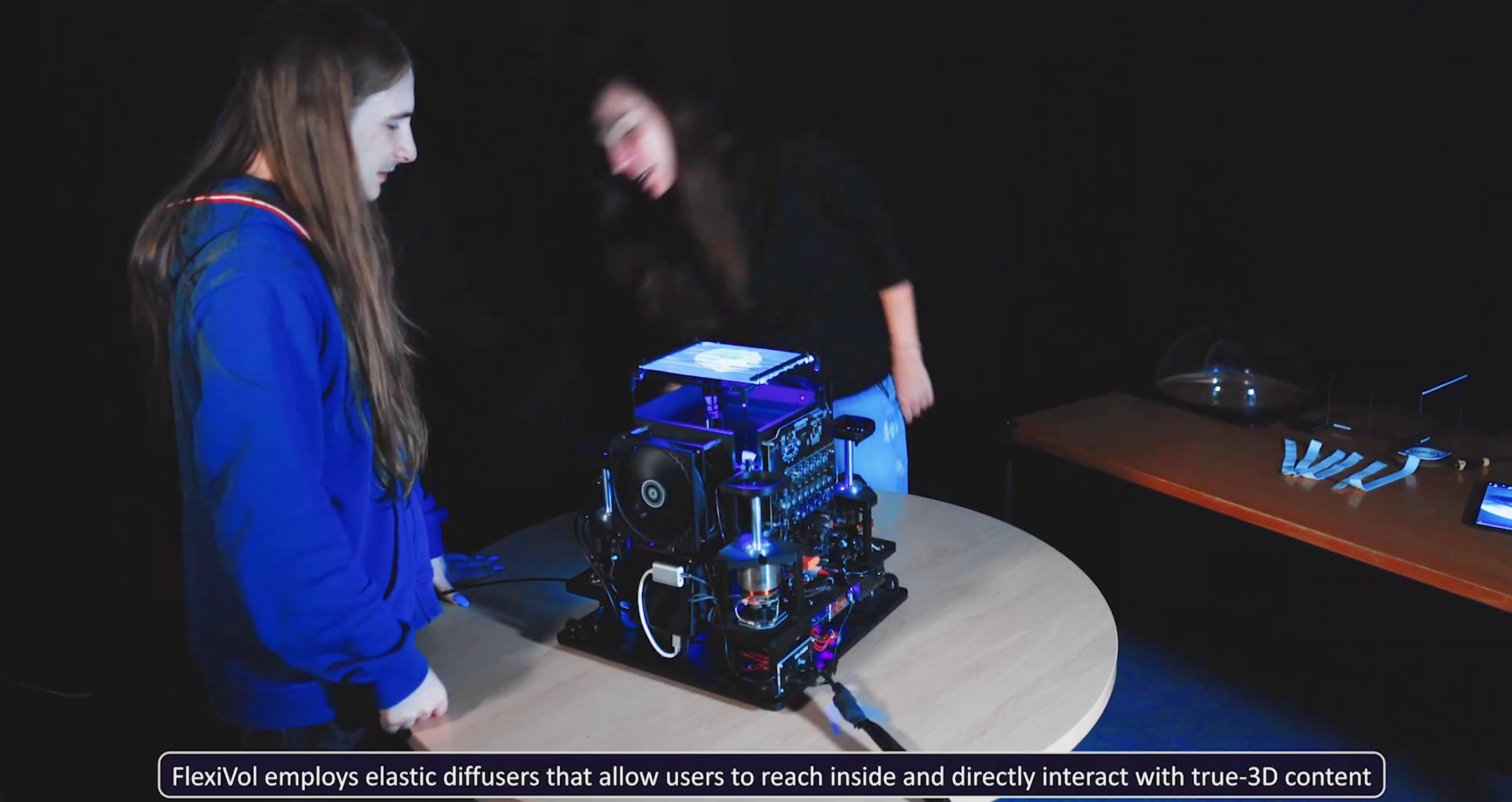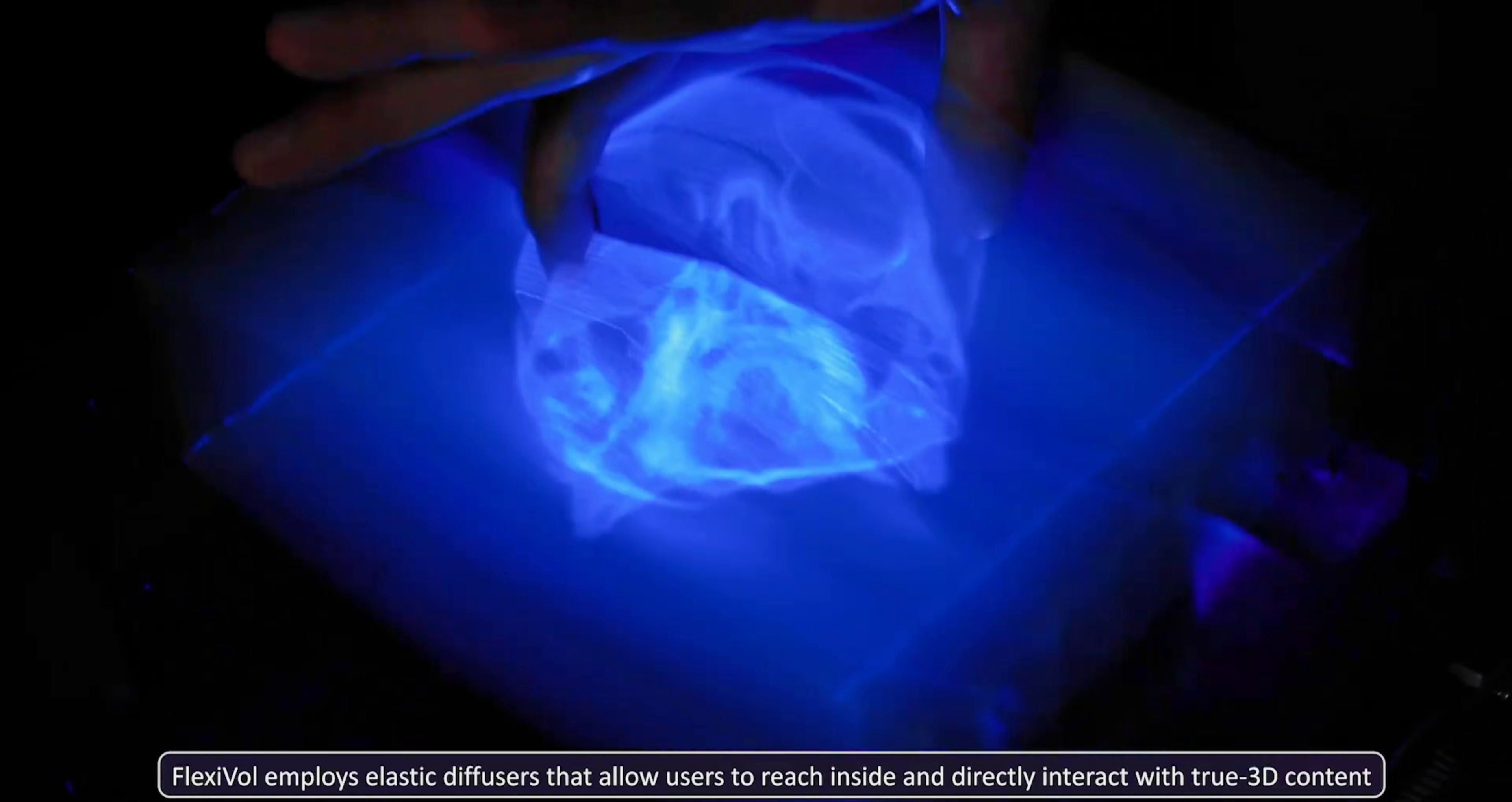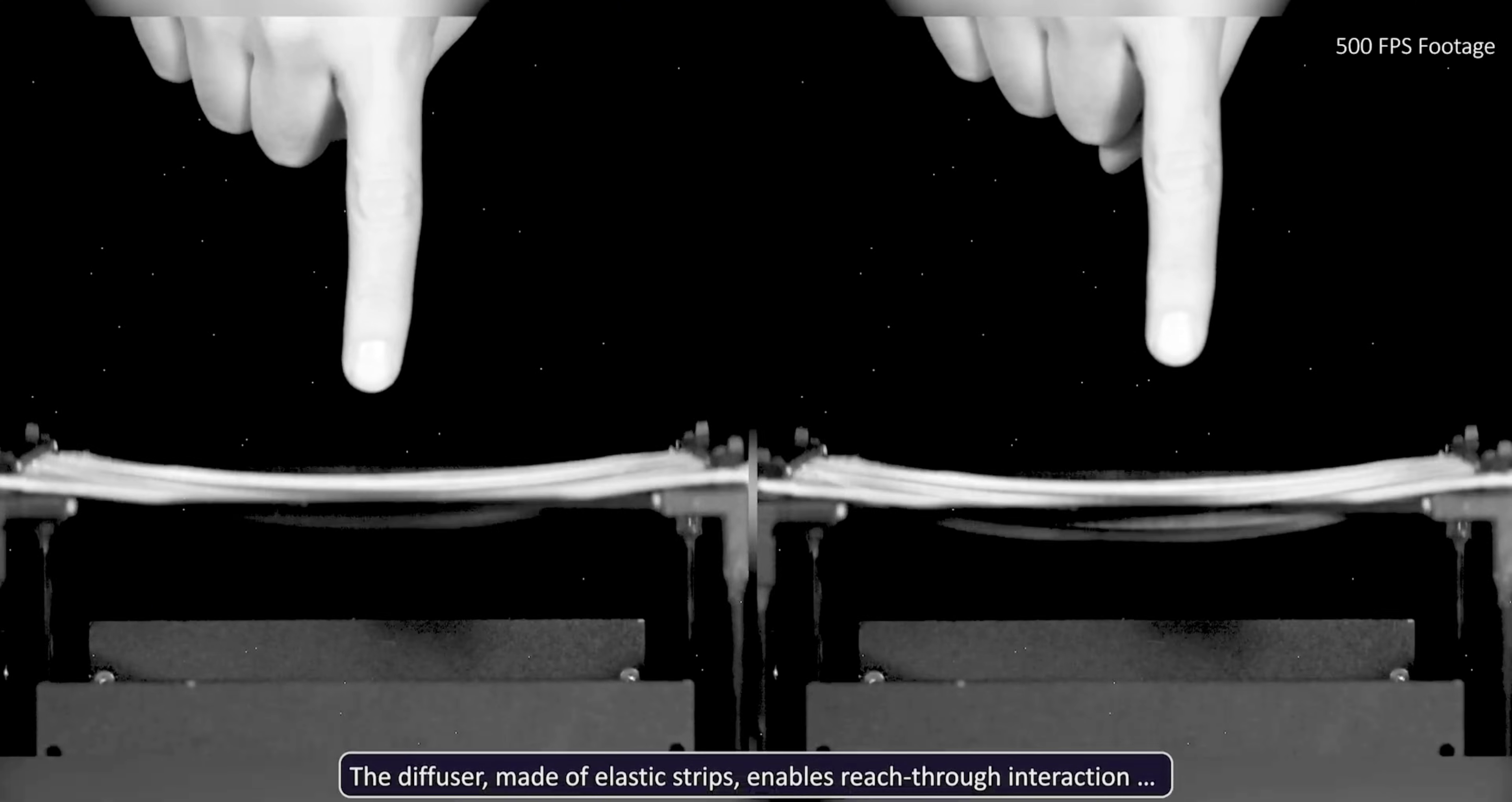The system uses a projector and oscillating diffuser strips to form the 3D image. The projector outputs slices at high frame rates, synchronized with the movement of the diffuser. The elastic diffuser enables direct physical interaction without damaging the display or harming the user.